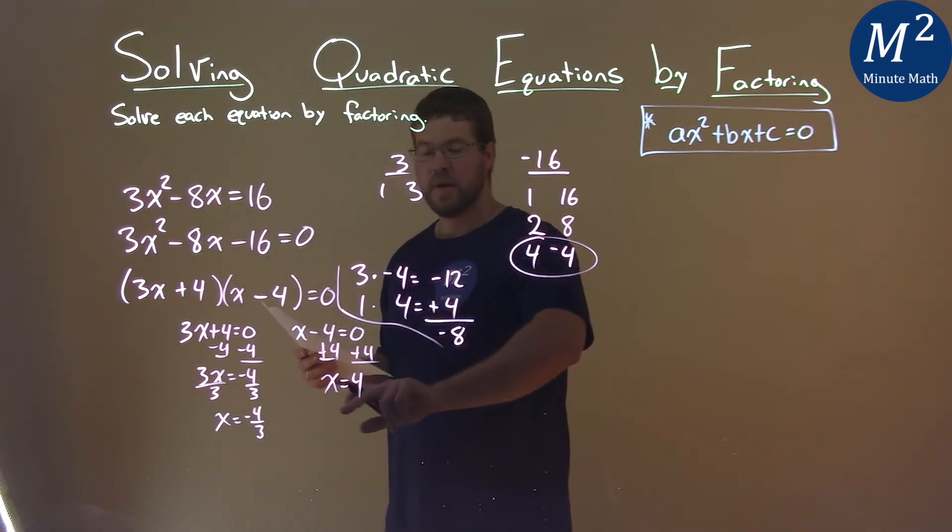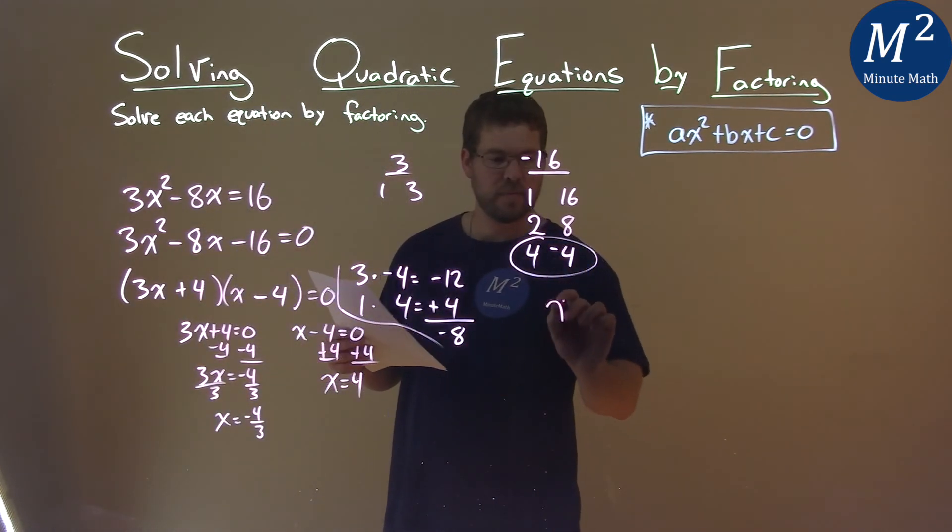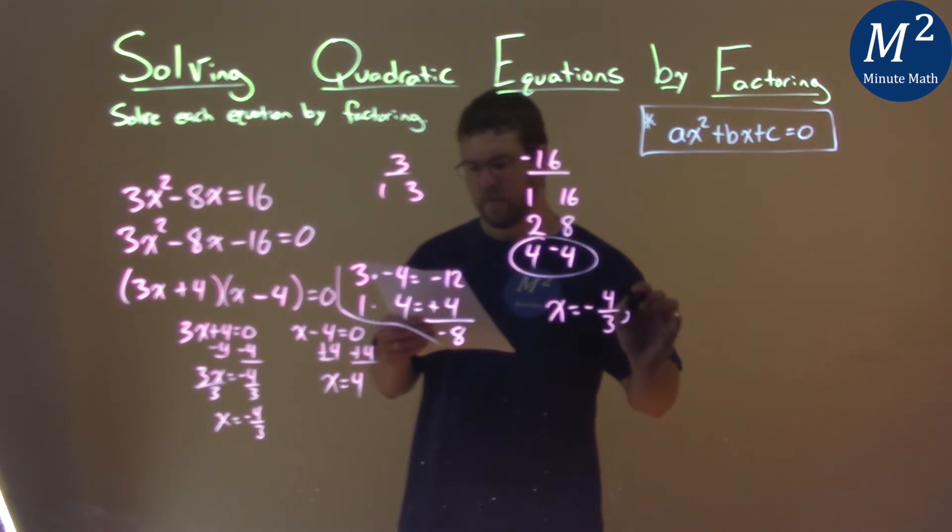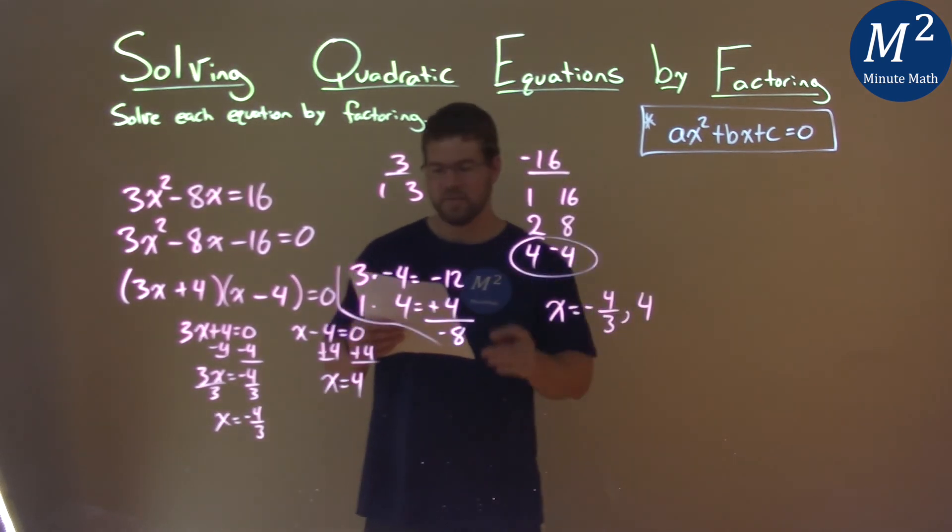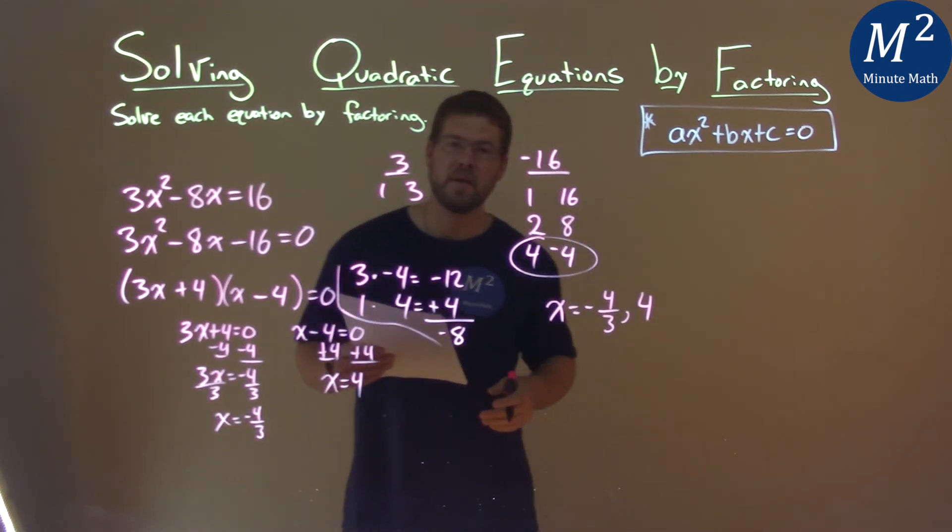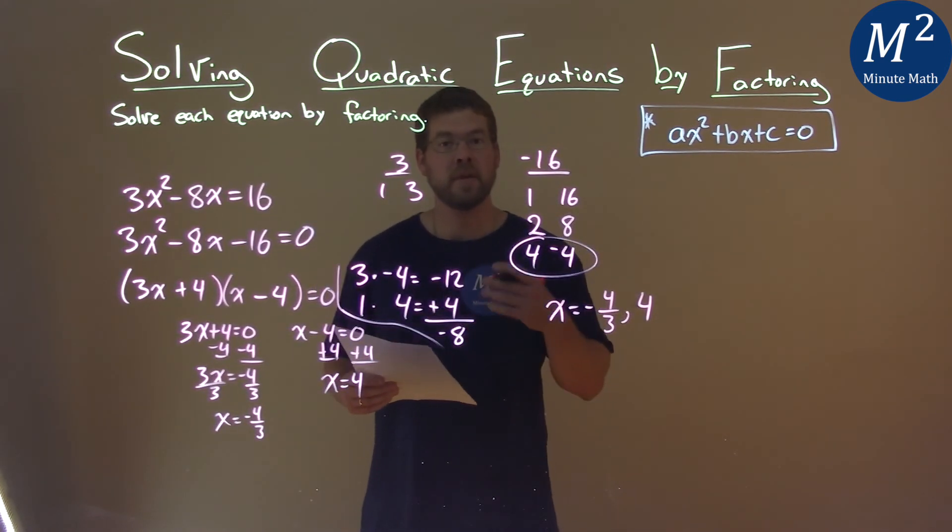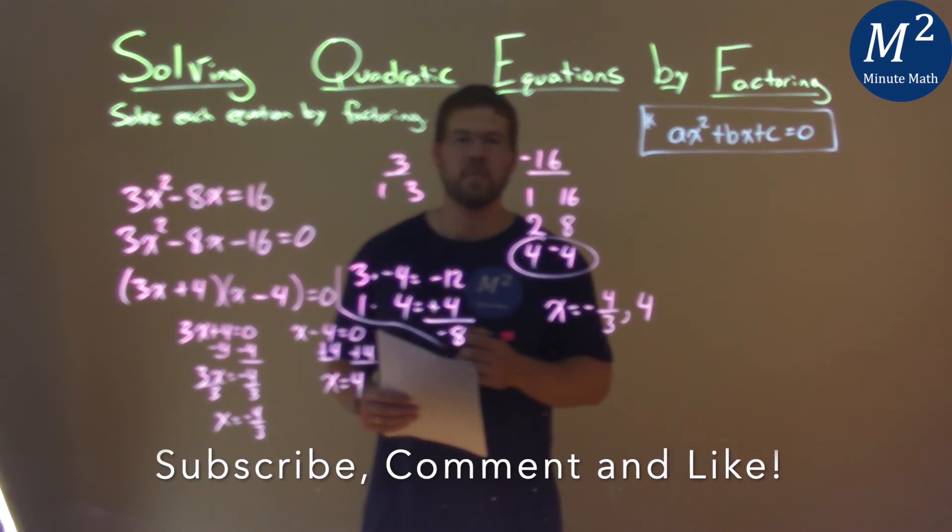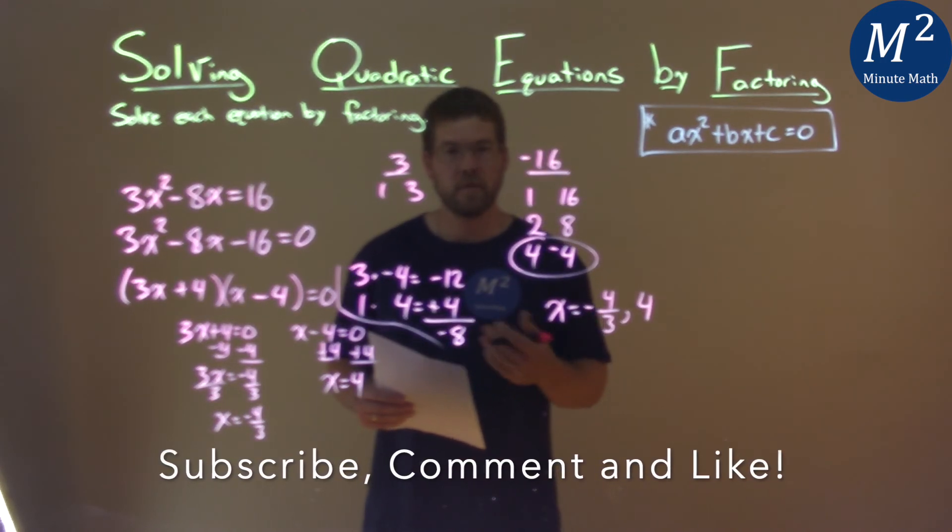So we can write these two answers as a single statement, as x equals a negative 4 thirds and 4. And that is our final answer. I hope this video was helpful for you. And if it was, please subscribe to this YouTube channel and like this video. This helps us make more free math lessons for you and for everyone else.